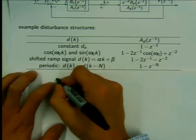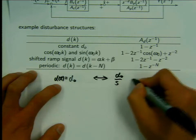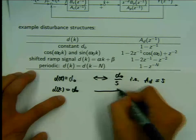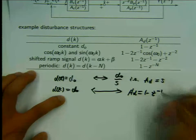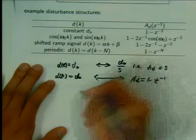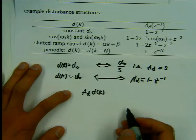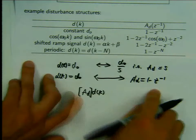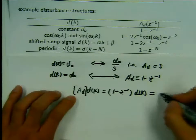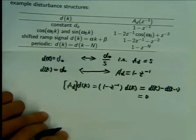In continuous time, d(t) = d corresponds to A_D = s. In discrete time, d(k) = d0 corresponds to A_D = 1 - z^(-1). You can understand this by considering that (1 - z^(-1)) * d(k) = d(k) - d(k-1). If d(k) is a constant, this gives zero. That's one way to understand why this characterizes the disturbance structure.